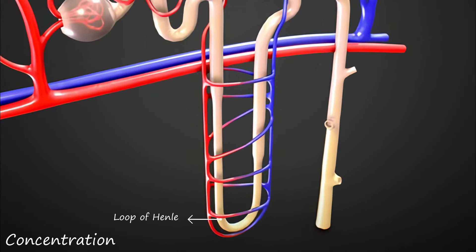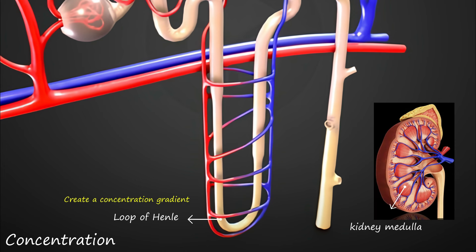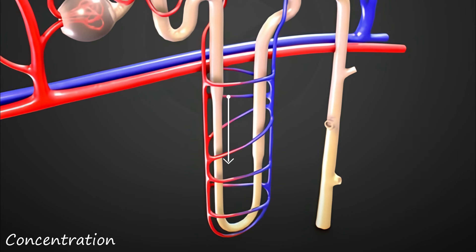The loop of Henle plays a crucial role in creating a concentration gradient in the kidney medulla. As the filtrate moves through the descending limb of the loop of Henle, water is reabsorbed into the surrounding interstitial fluid, making the filtrate more concentrated.